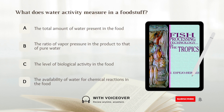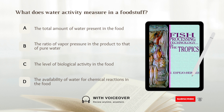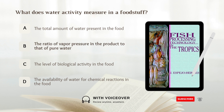What does water activity measure in a foodstuff? A. The total amount of water present in the food. B. The ratio of vapor pressure in the product to that of pure water. C. The level of biological activity in the food. D. The availability of water for chemical reactions in the food. Answer: B. The ratio of vapor pressure in the product to that of pure water.